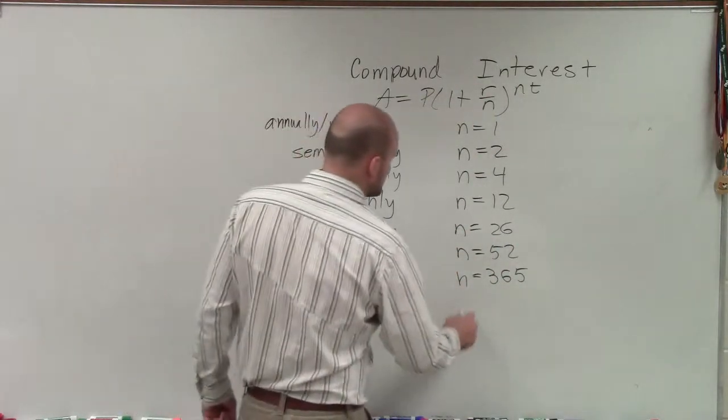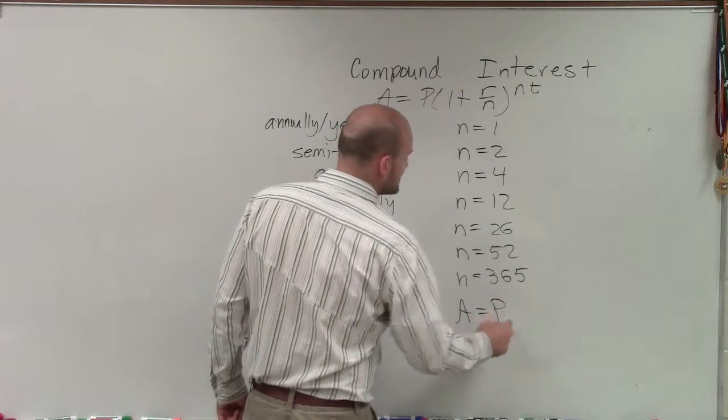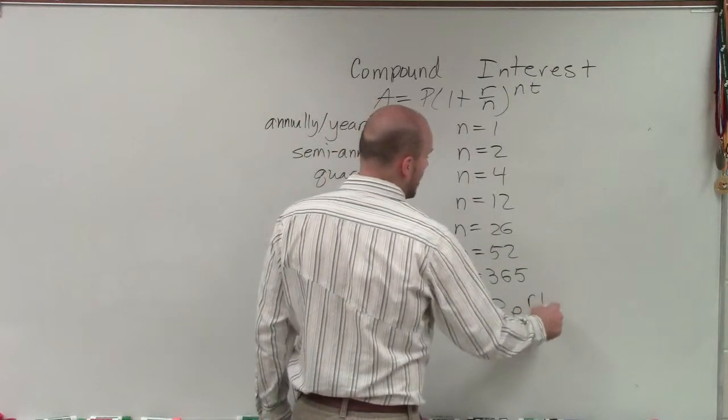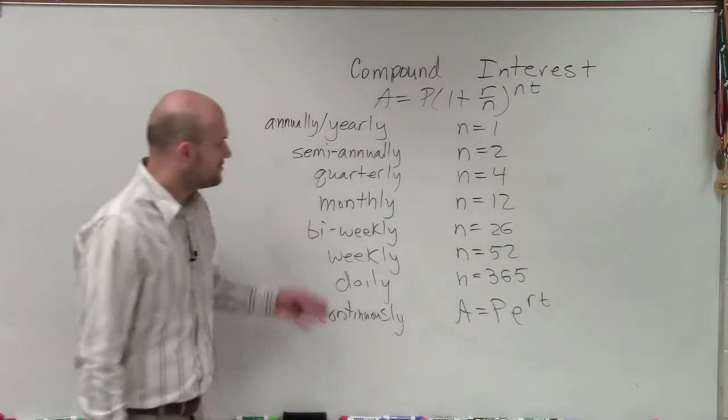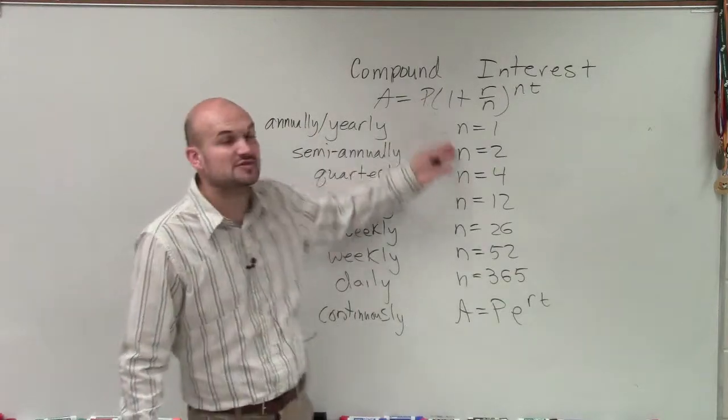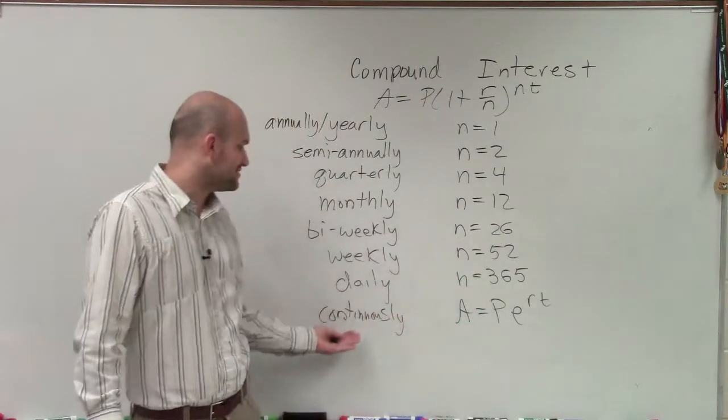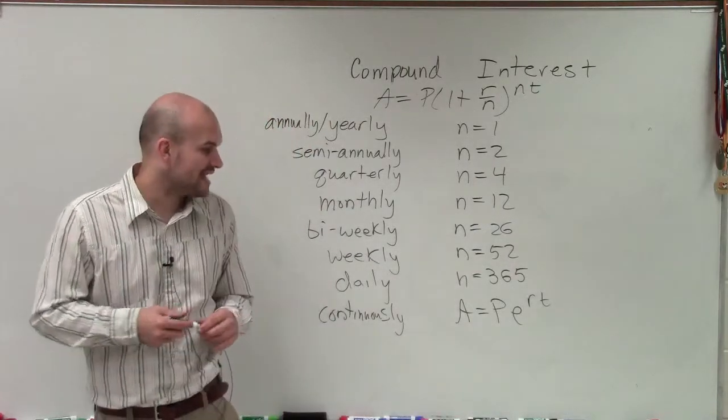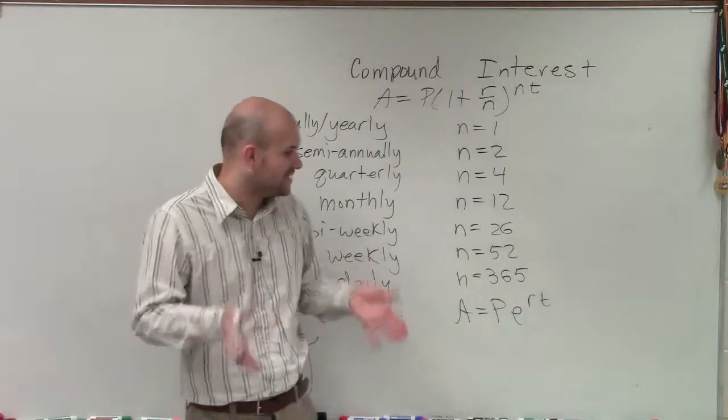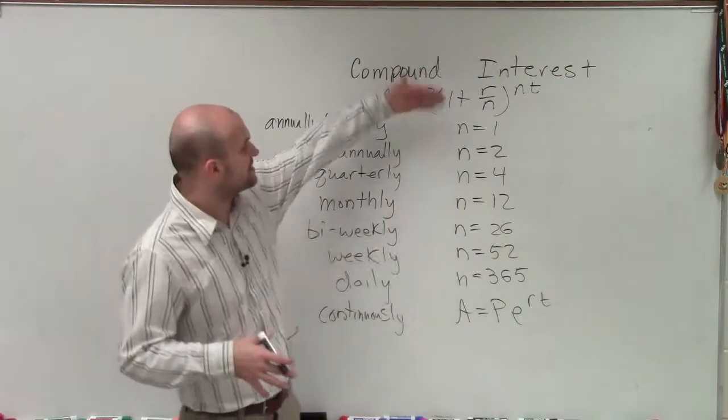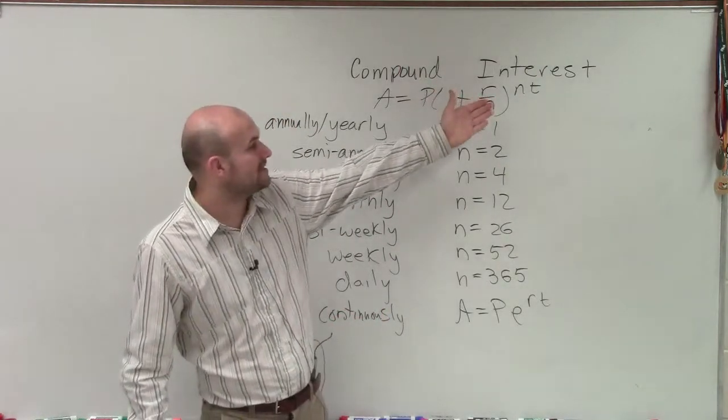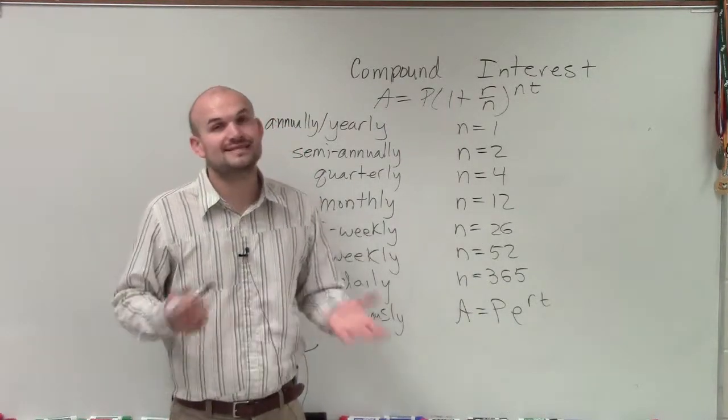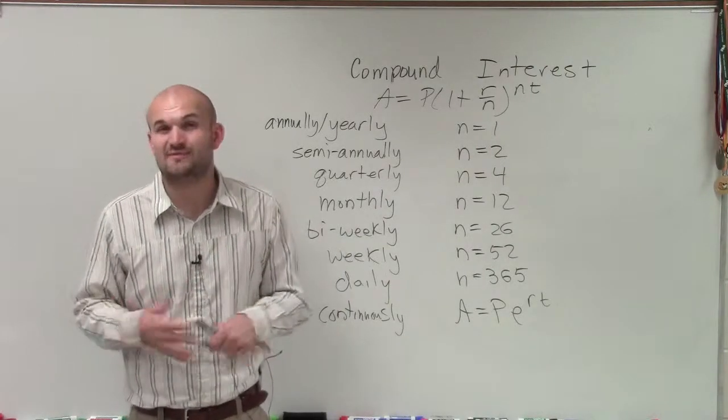Which we call, I like to call it PERT. But now it's going to be your principal times our constant E raised to R times T. So it's very important that for all of these different types of problems, you can use the value of N. But if I ask you to start talking about something continuously, we have to now use a totally different equation, which is A equals P times E to the RT, where again A, P, R, and T are going to represent the same as another compound interest. However, E is going to be your constant, which is in most scientific calculators. Or obviously, you can look it up to find its approximate value.